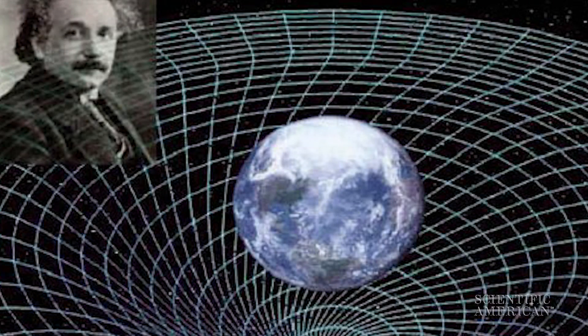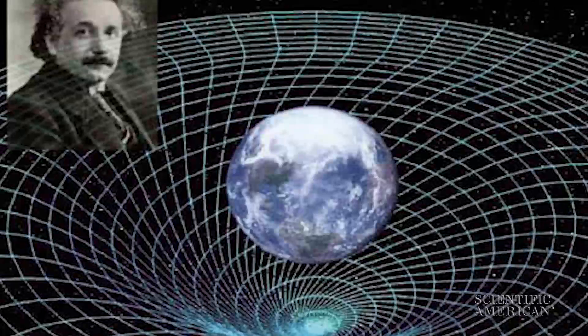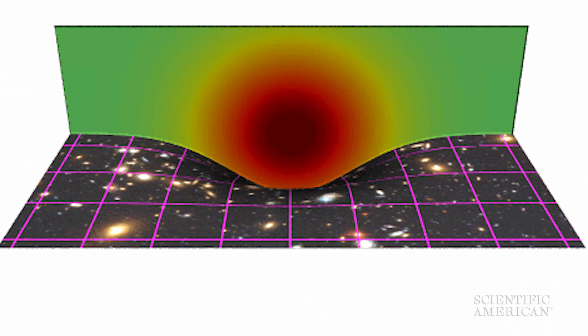General relativity tells us that gravity bends spacetime, causing light to travel a curved path near massive objects, as if falling into a bowl.